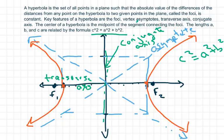The transverse axis is the one that the hyperbola opens along — either left/right or up/down. If it opens up and down, the transverse axis is the y-axis. In the case where it opens over the x-axis, the transverse axis is the x-axis, and the conjugate is just the other axis.